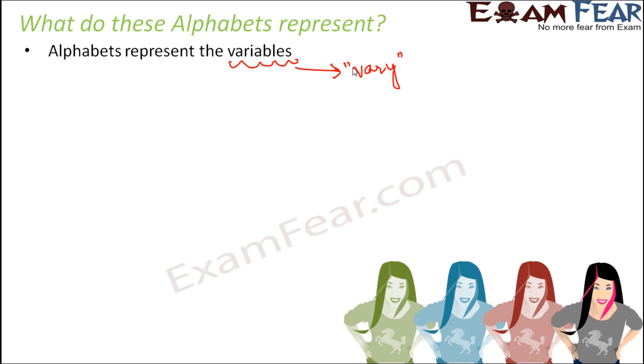In a similar way, these alphabets, for example we assume that your big brother has x number of chocolates. Now this x number of chocolates, x could be 10, x could be 20, x could be 3, x could be 100. So the values of x could be anything, right.